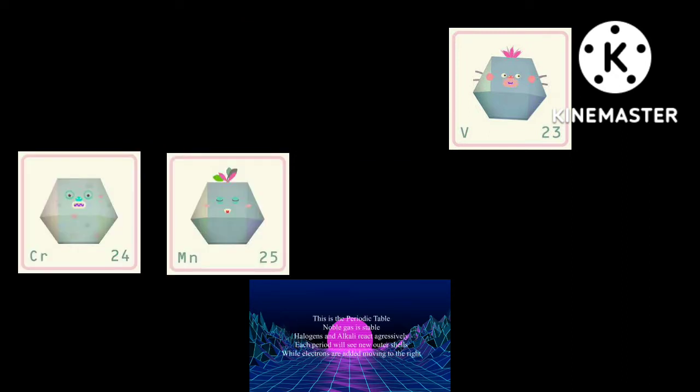This is the Periodic Table, noble gas is stable, halogens and alkali react aggressively, each period will see new outer shells while electrons are added moving to the right.